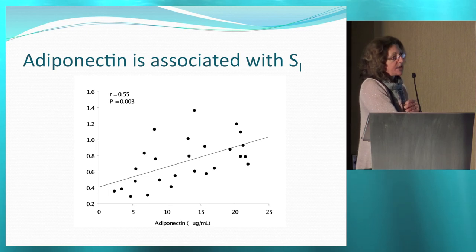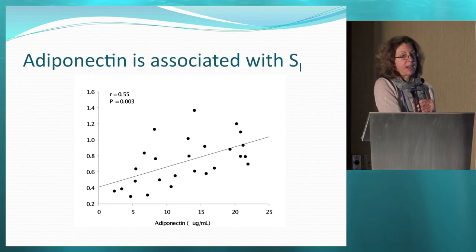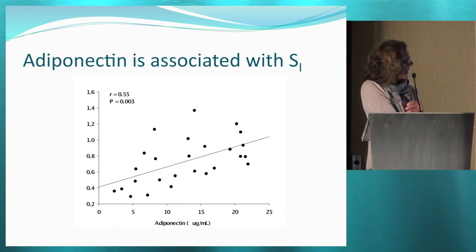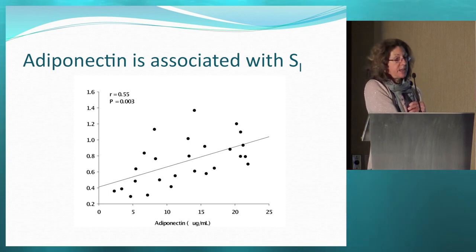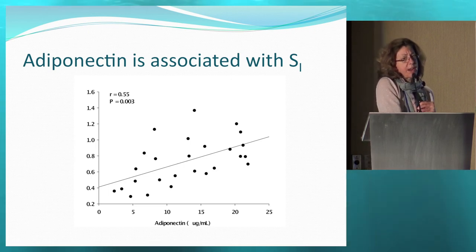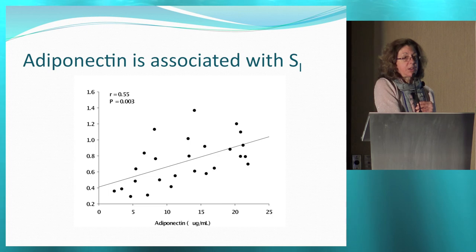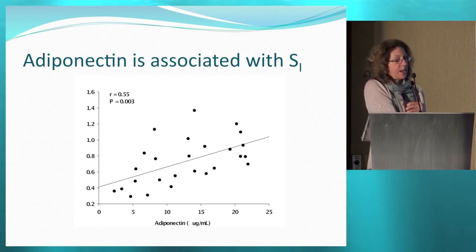Looking at adiponectin, the unadjusted data show a very strong positive association between adiponectin and insulin sensitivity — consistent with what many studies have shown. When we looked overall to see if resistant starch had an effect on adiponectin in the whole group combined, we didn't see it, nor by insulin sensitivity subgroup. But when we broke it down by ethnicity, we found a striking effect of resistant starch consumption on adiponectin.